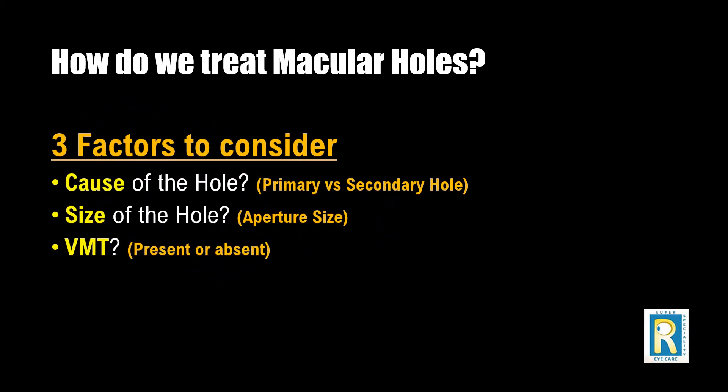There are three factors to consider when deciding how to treat a macular hole. First, what is the cause of the hole — has it happened due to age, or is there some other reason like injury or vascular conditions? Nearly 83 percent of macular holes have no prior cause; they are due to age, and that's why they are called idiopathic or primary macular holes. The second factor is the size of the hole, and the third is whether the vitreous is still attached to the hole — known as vitreomacular traction.